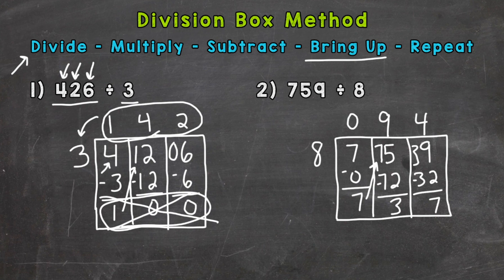So this right here, the 7 is our remainder. So our answer is 94 remainder 7.